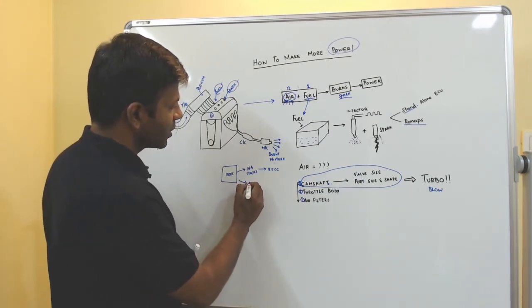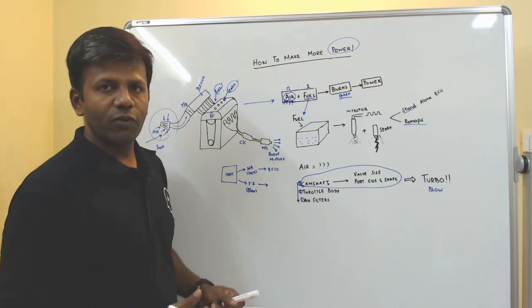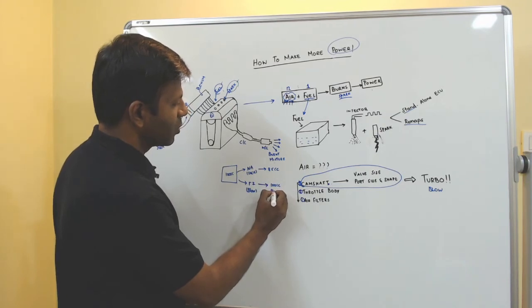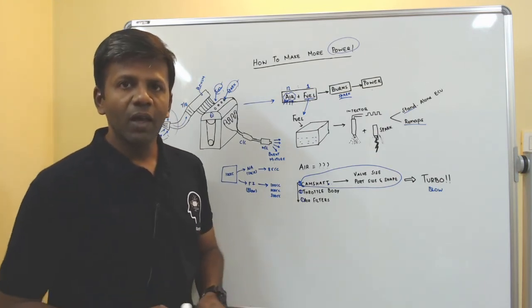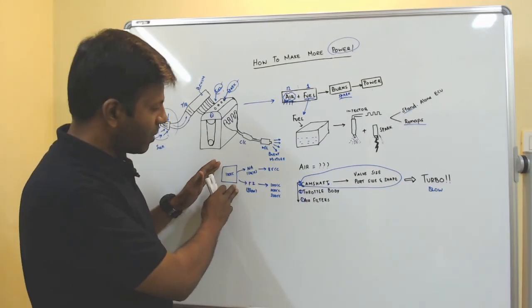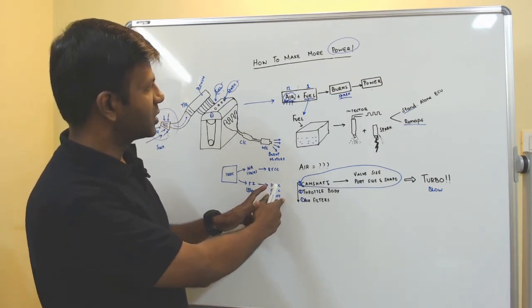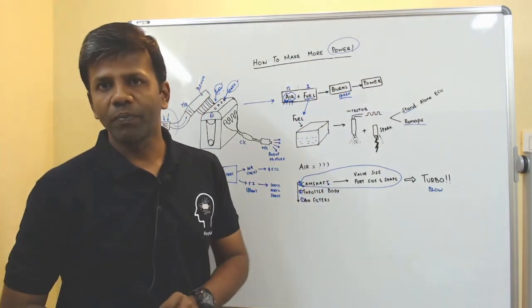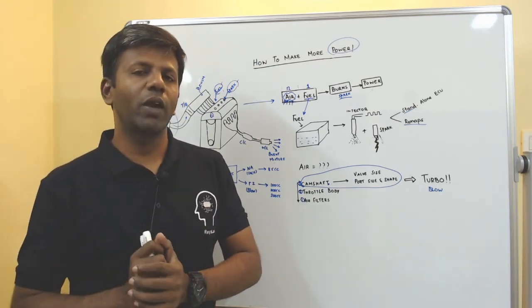Whereas if it is forced induction, or if it is blow, then depending on the size of turbo, the boost pressure I'm running, I can fill in 100cc or I can fill in 200cc or even 300cc of air. Now what you see here is very simply, if you have a turbocharger on an engine, you can take a 100cc engine and make it flow as much air as a 300cc engine. If you are flowing air corresponding to 300cc, then corresponding to that you can put in fuel and corresponding to that you will get more power. So the idea for you to understand here is that, ultimately if you want your engine to make more power, you have to flow more air through the engine.